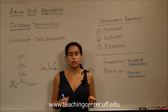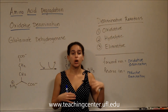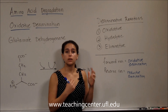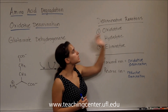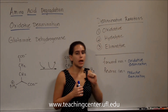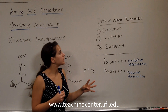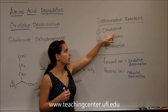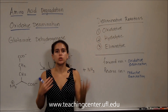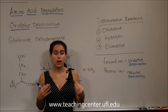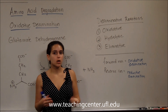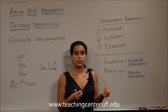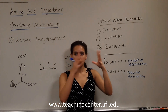Now that we've talked about transamination reactions, which are a very important part of the urea cycle, let's look at the other important parts, which are deamination reactions. We have three types: oxidative deamination, which is going to use NAD+ or FAD+ to oxidize the amino acid we're talking about.